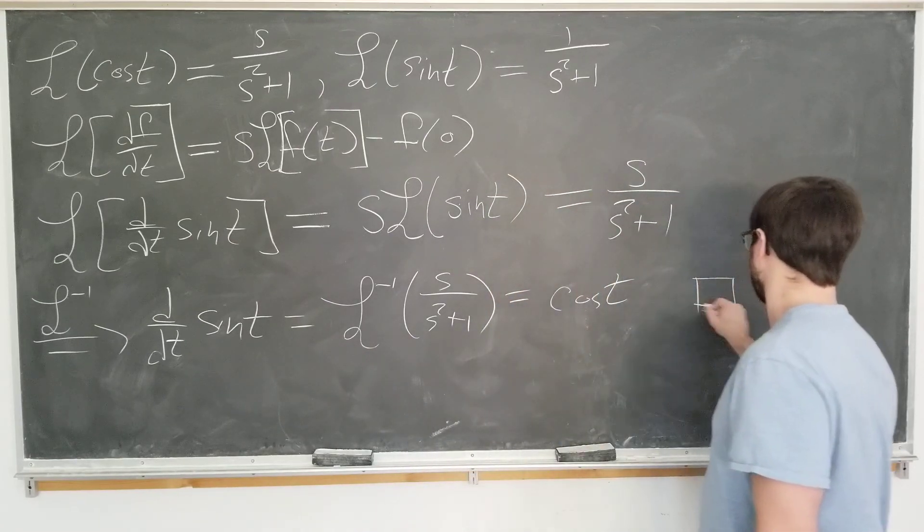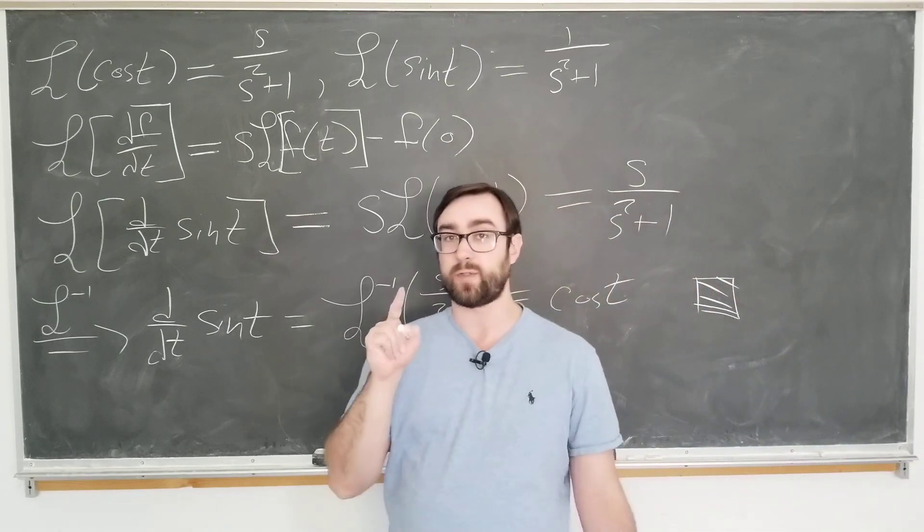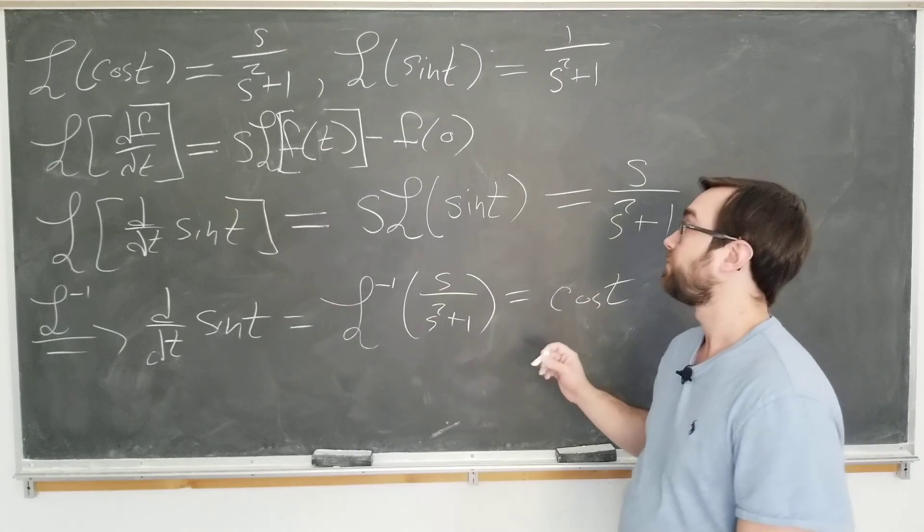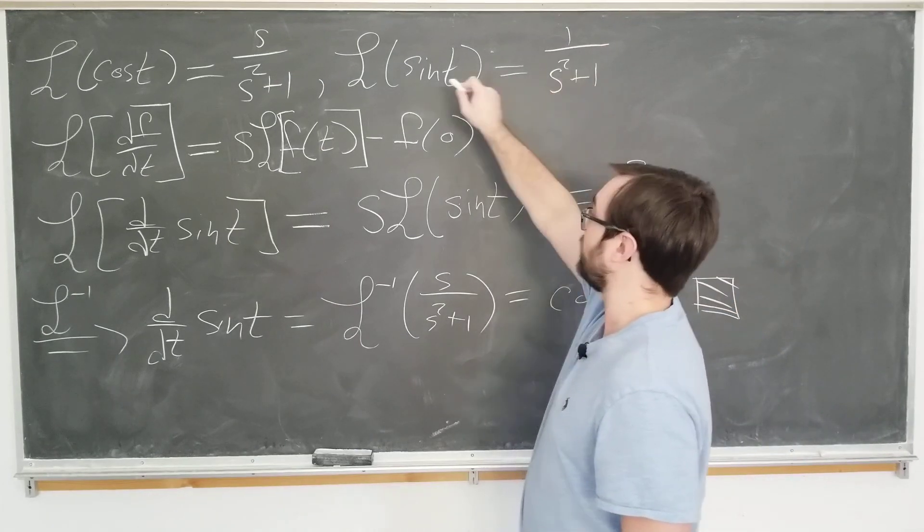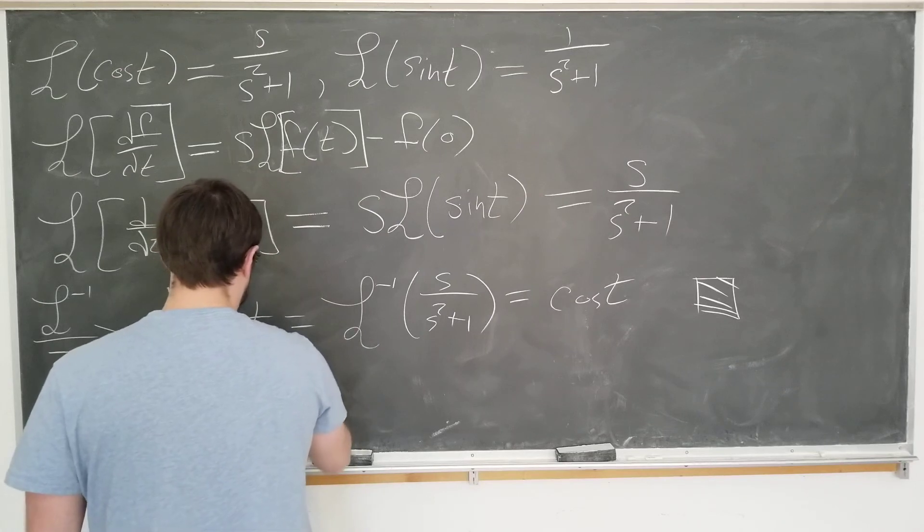Congratulations, everyone. We have now shown once again that derivative of sine is cosine. But have we really? The answer is sort of. To derive these expressions in the first place, we had to use Euler's identity. Namely, e to the i x is equal to cosine of x plus i sine of x.